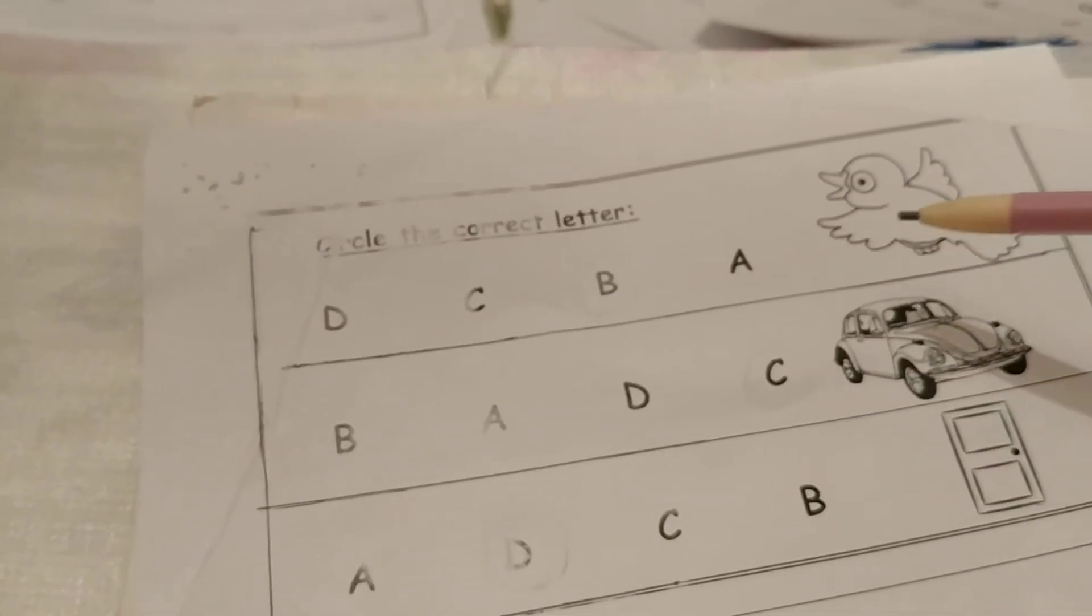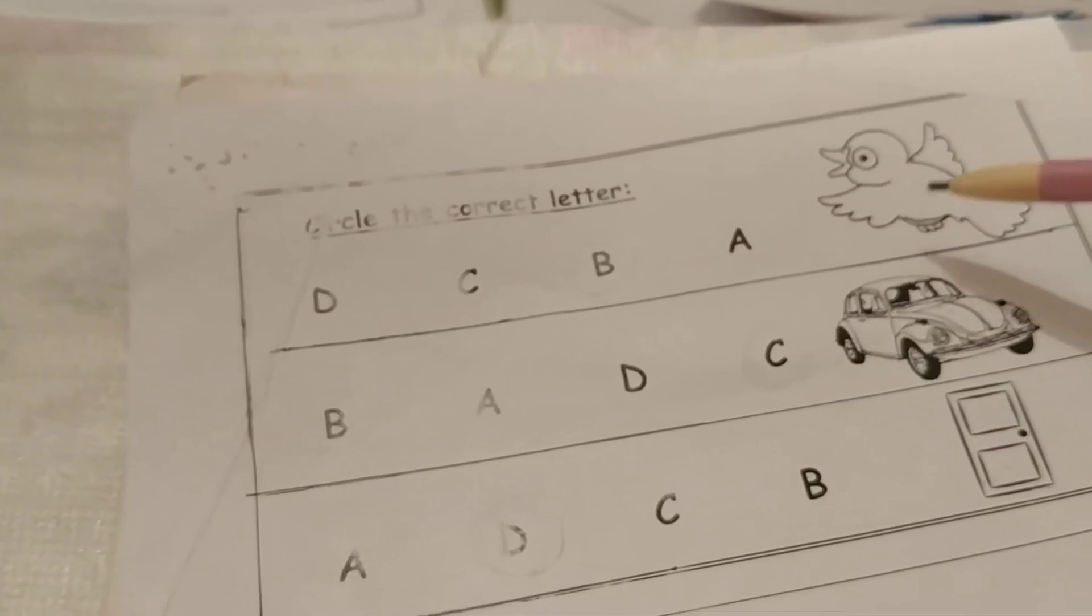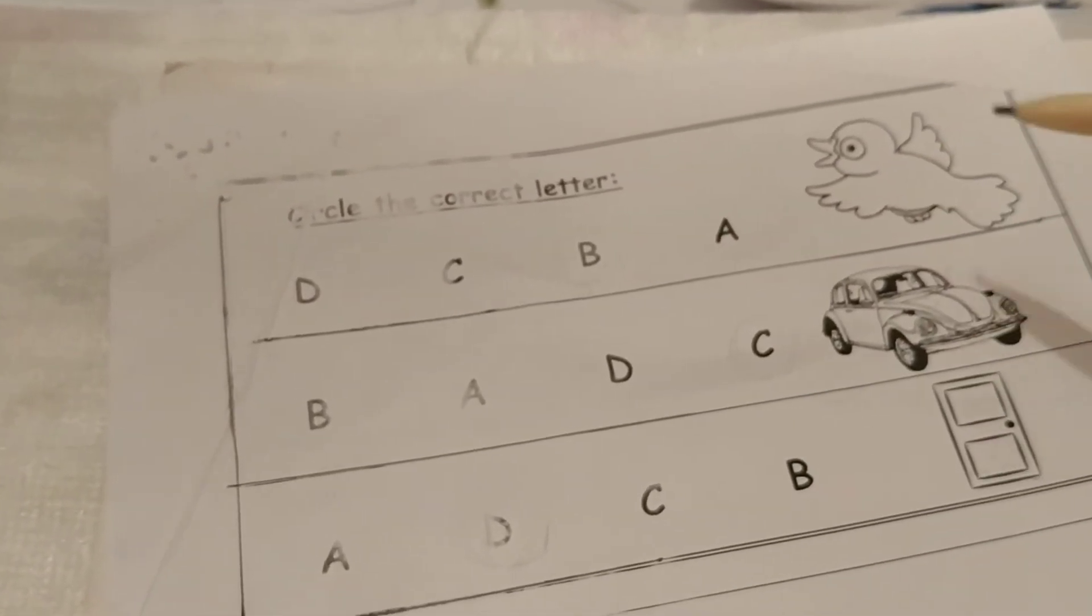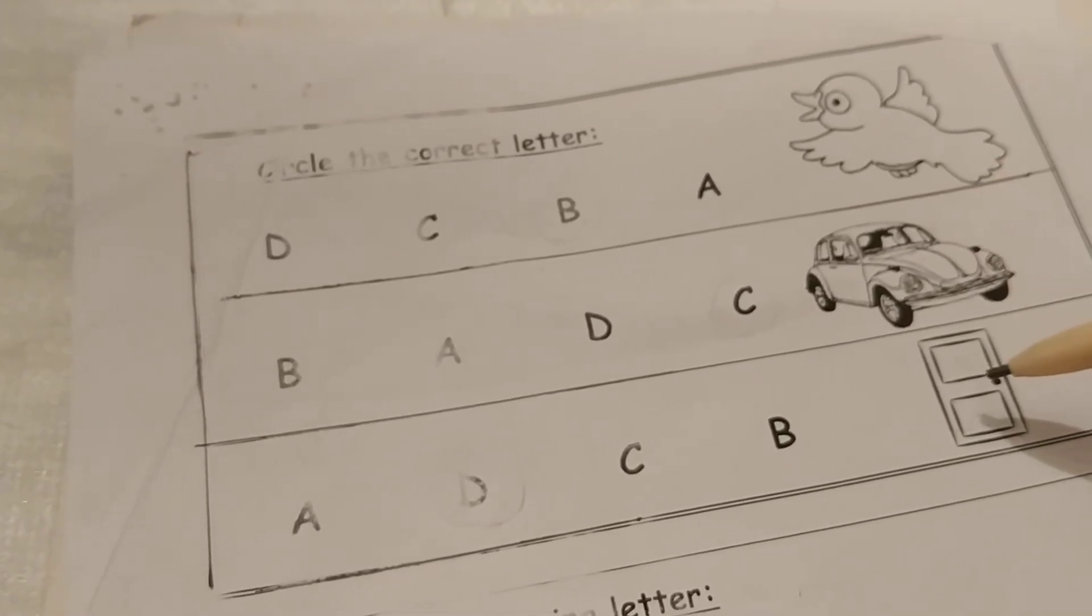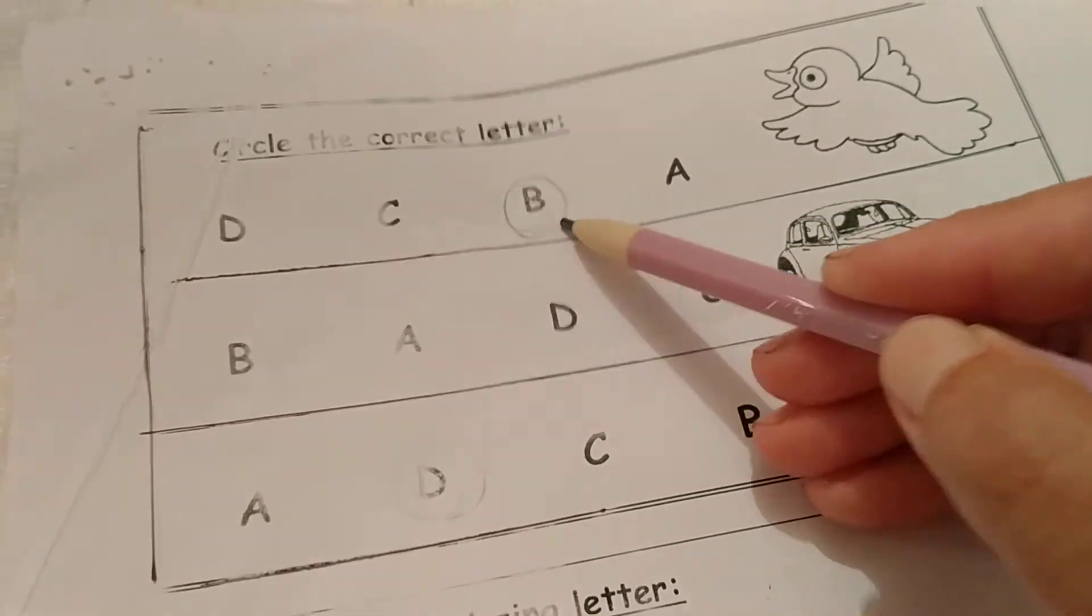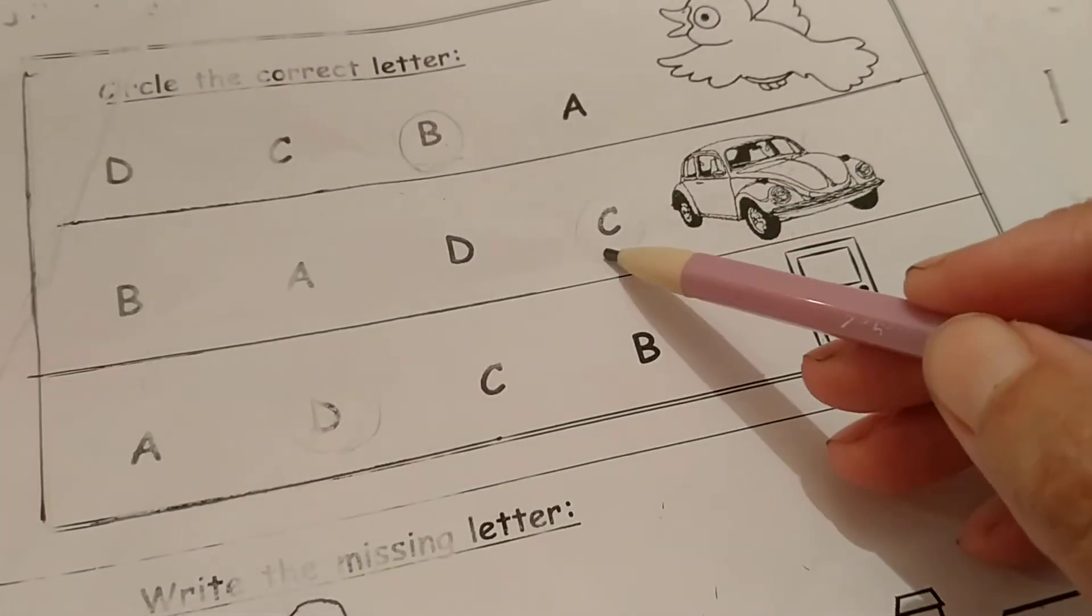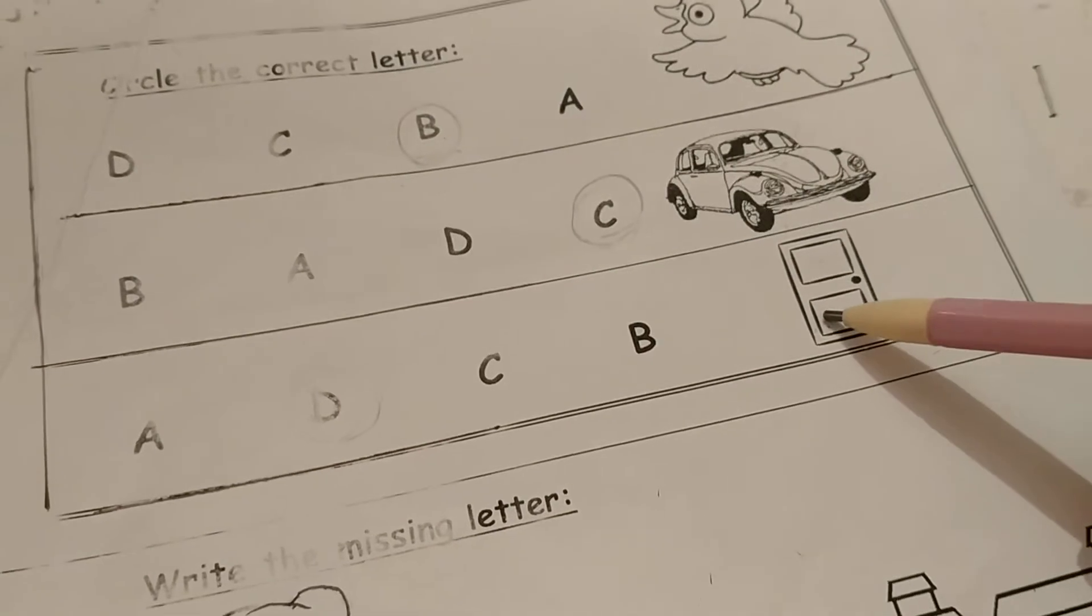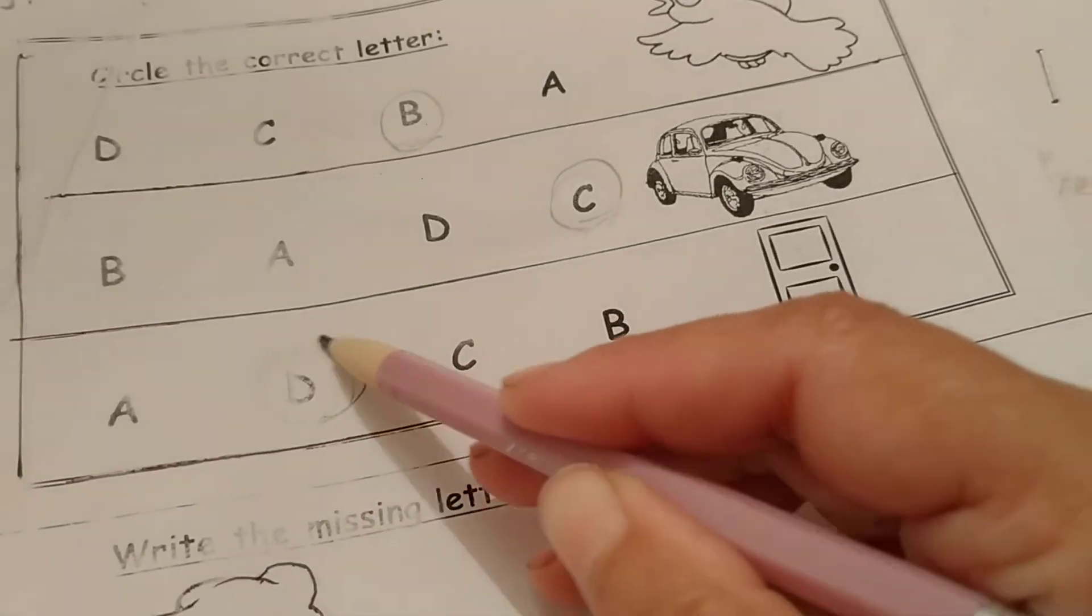Time for the exercise. Circle the correct letter. Here are three pictures. I want you to circle the right letter. Bird starts with letter B. Car starts with letter C. Door starts with letter D.